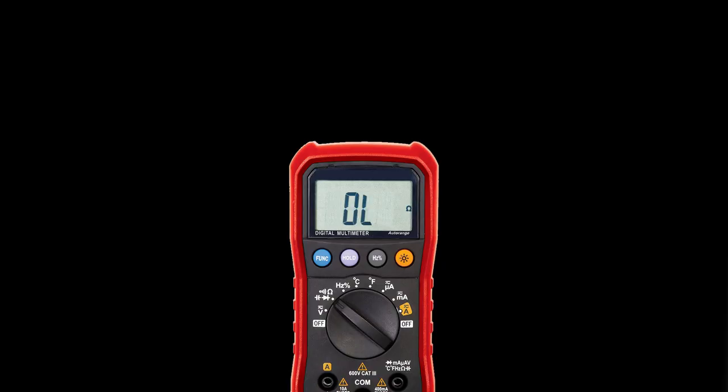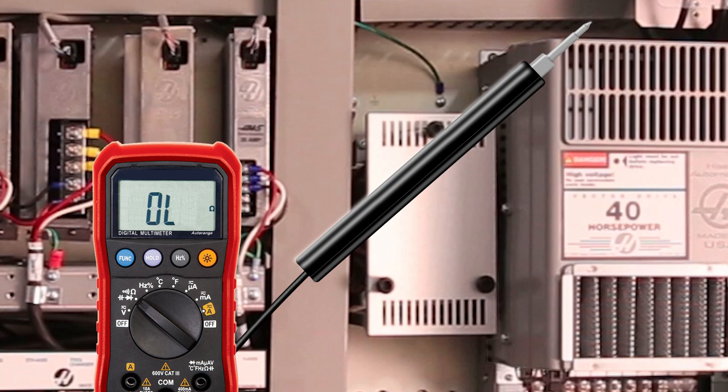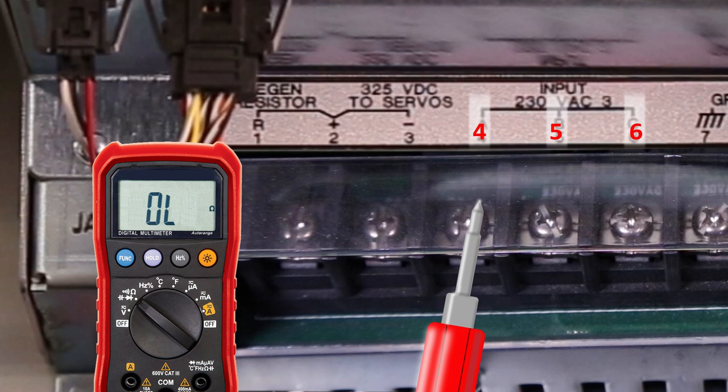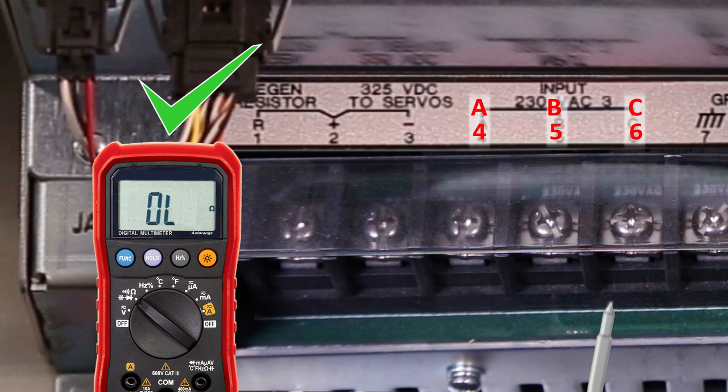Finally, check the status of the bridge rectifier. Still in resistance mode, touch the black lead to the machine chassis. Touch the red lead to terminals 4, 5, and 6. These are on the input side of the bus and are labeled A, B, and C.